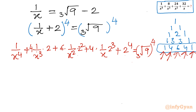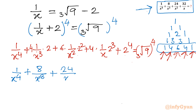Now let us simplify the left-hand side. We get: 1/x⁴ plus 8/x³ plus 24/x² plus 32/x plus 16. This is exactly our required expression plus 16, and the right-hand side is (cube root of 9)⁴.